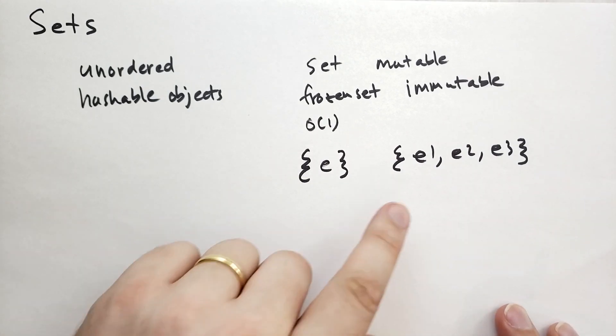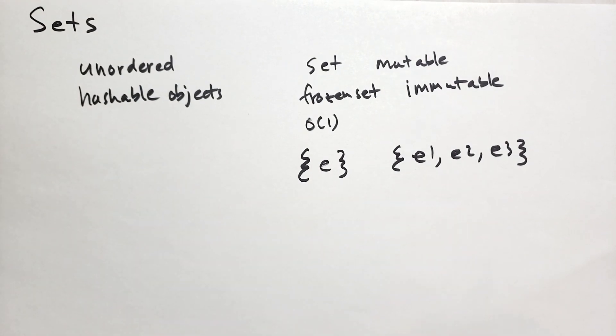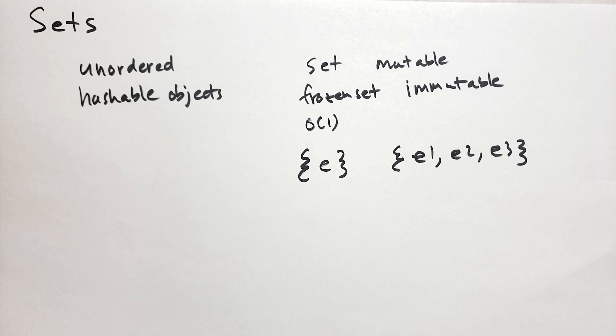If we add the same item twice to a set, it's as if we only added it once. Note that in set syntax, we do not have colons. That's only in dictionaries. The colon separates the key from the value in dictionaries.